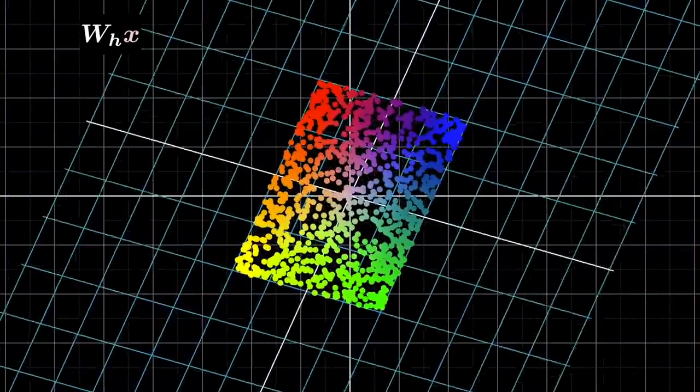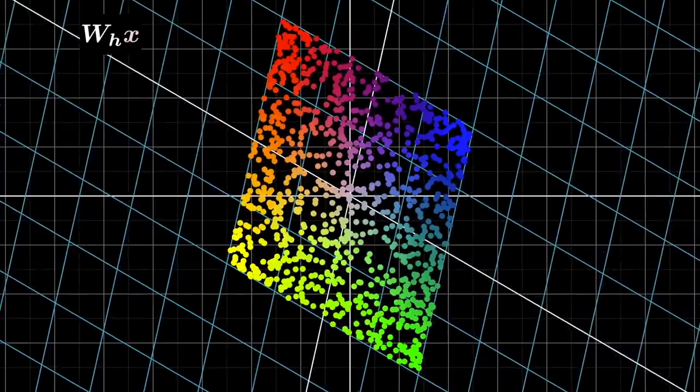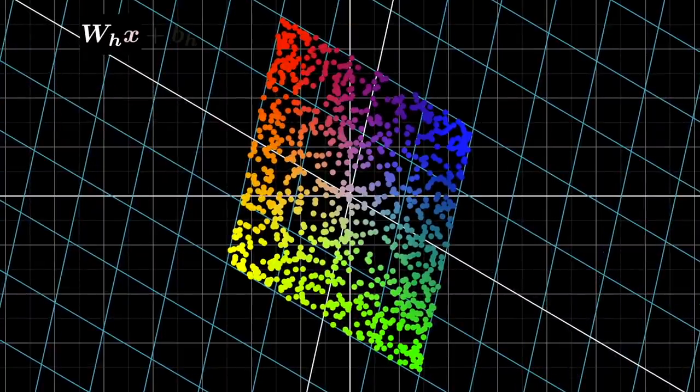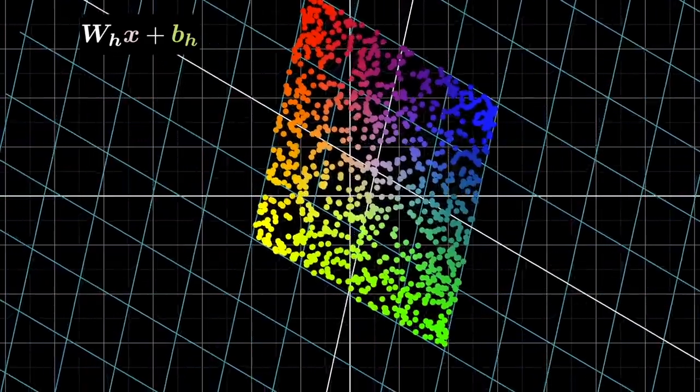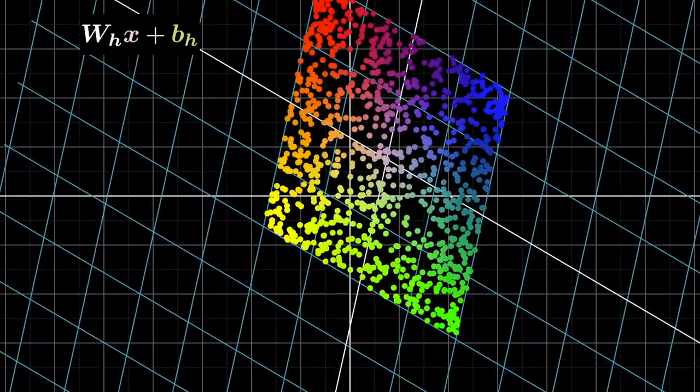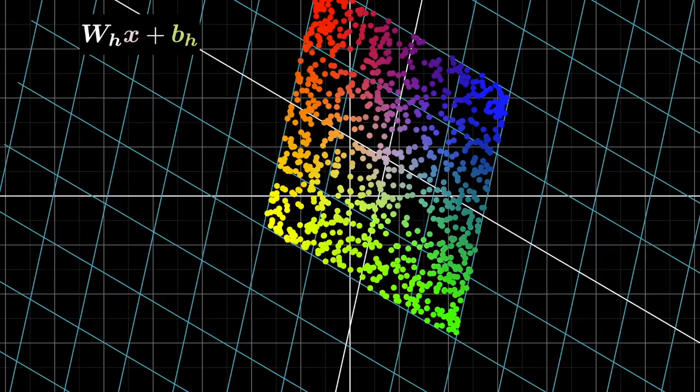The first transformation is multiplying by the weight matrix, which is a linear transformation. Notice how this is some combination of rotation shearing and scaling. The next step is adding the bias vector. This has the effect of shifting the points in the direction of the bias term.